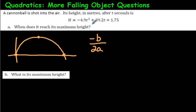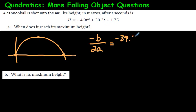Then I'll show you how to get the answer using the quadratic formula, which takes a little longer. Using negative b over 2a: the equation is in standard form, so the a value is negative 4.9, the b value is 39.2, and the c value is 1.75 — but we don't need c for this formula. To find the time at which maximum height occurs, we go negative b, which is negative 39.2, over 2 times a, which is 2 times negative 4.9.